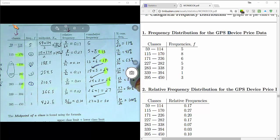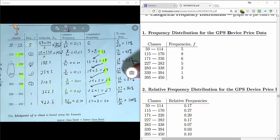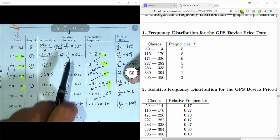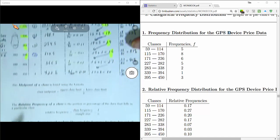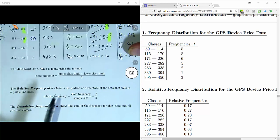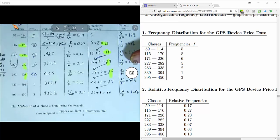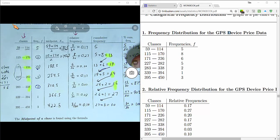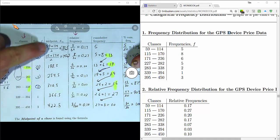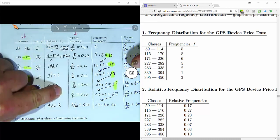So again, to make the relative frequency distribution, you have to find relative frequencies for each one of your classes using this formula. And then you just simply make a table out of the classes column and the relative frequency column.